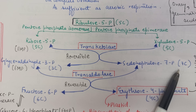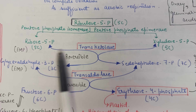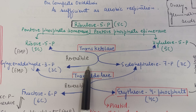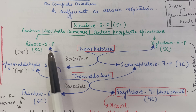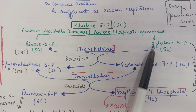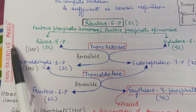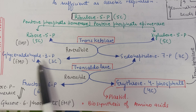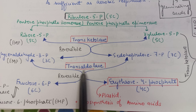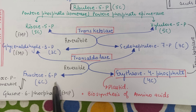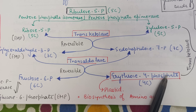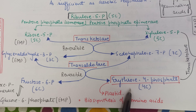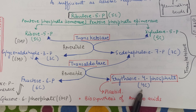These two 5-carbon sugars combine in the presence of the enzyme transketolase, because they are ketose sugars. Transketolase converts them into glyceraldehyde-3-phosphate (3-carbon) and sedoheptulose-7-phosphate (7-carbon), maintaining 10 carbons total. Unlike the oxidative phase, all steps in the non-oxidative phase are reversible.